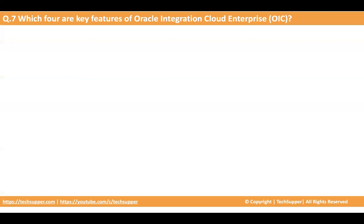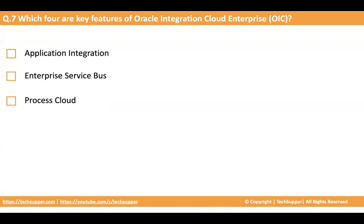The next question: what are the four key features of Oracle integration cloud enterprise version? The options are: application integration, enterprise service bus, process cloud, integration insights, and B2B. If you don't know, log in to the OIC home page, go to the navigation, and find the navigation items related to the features.